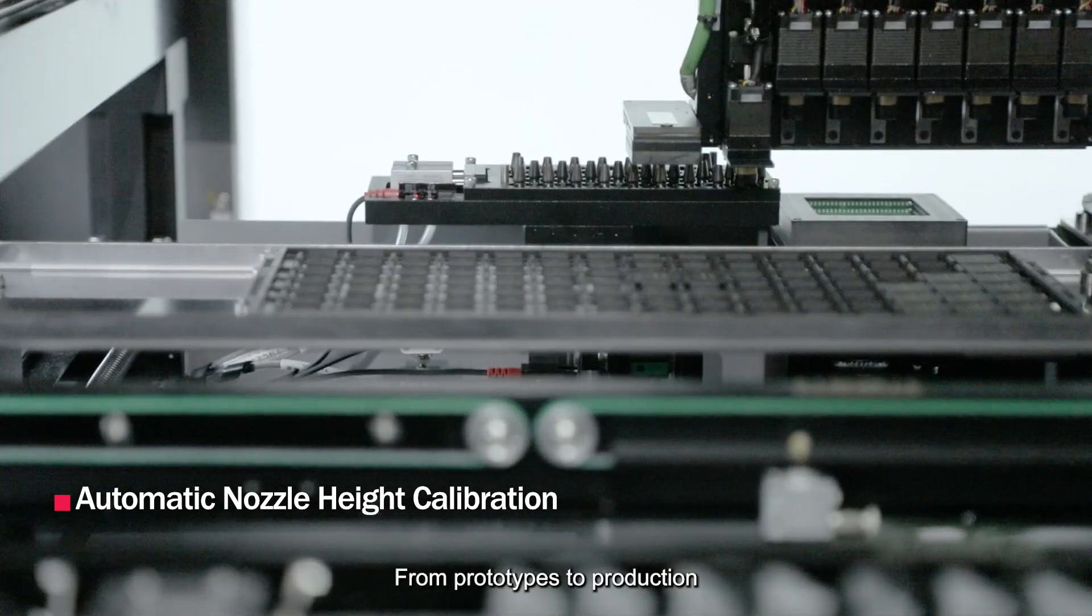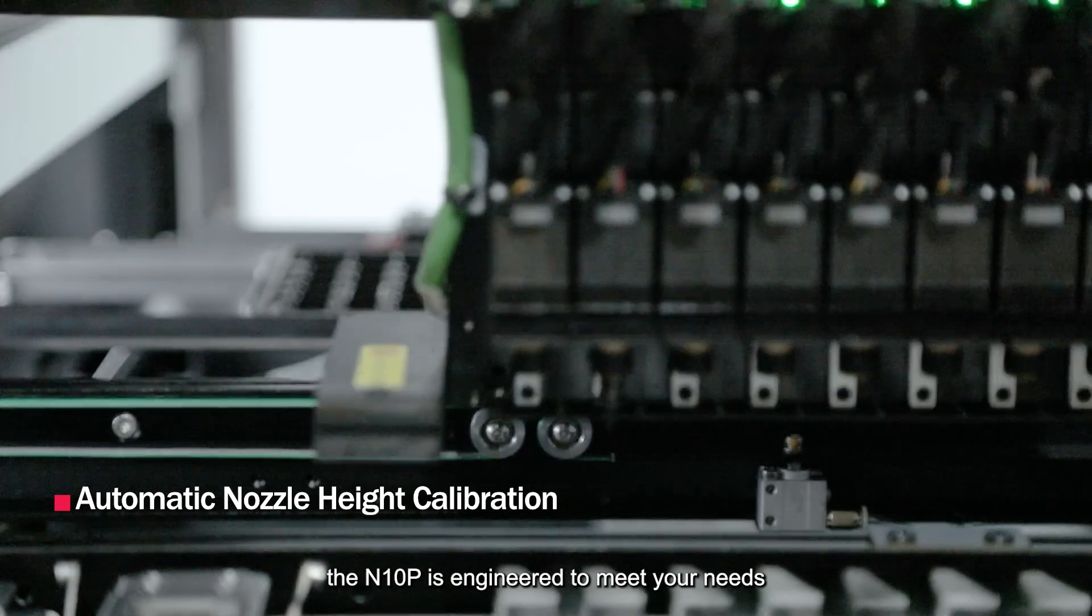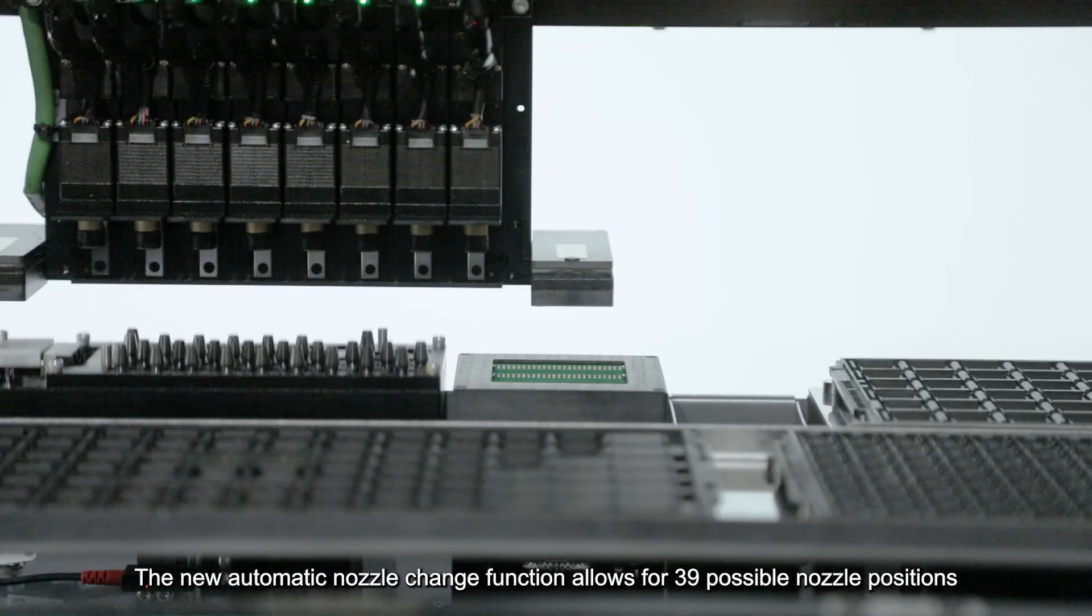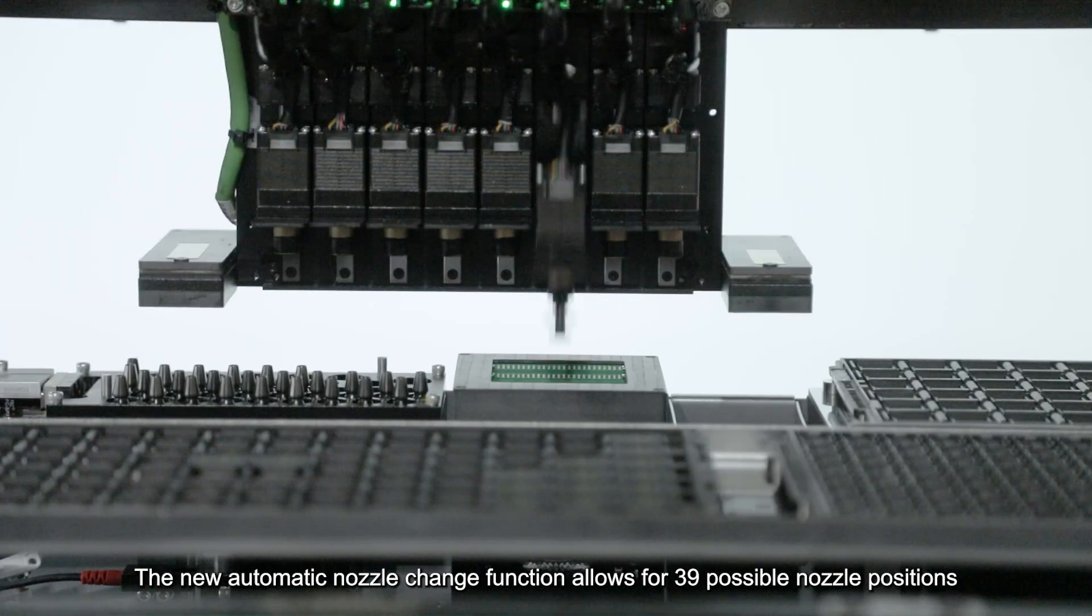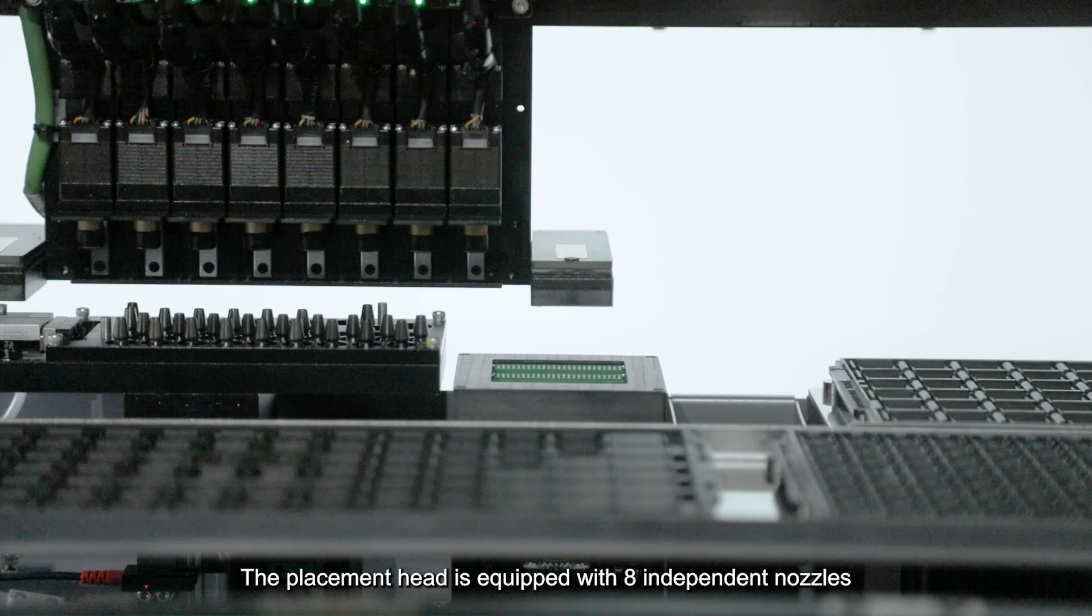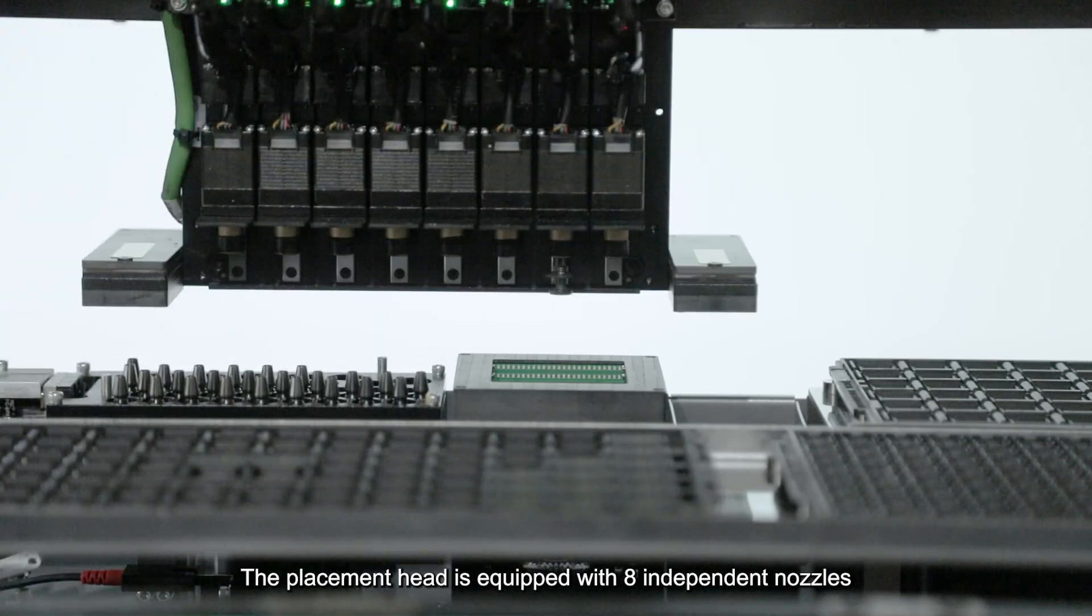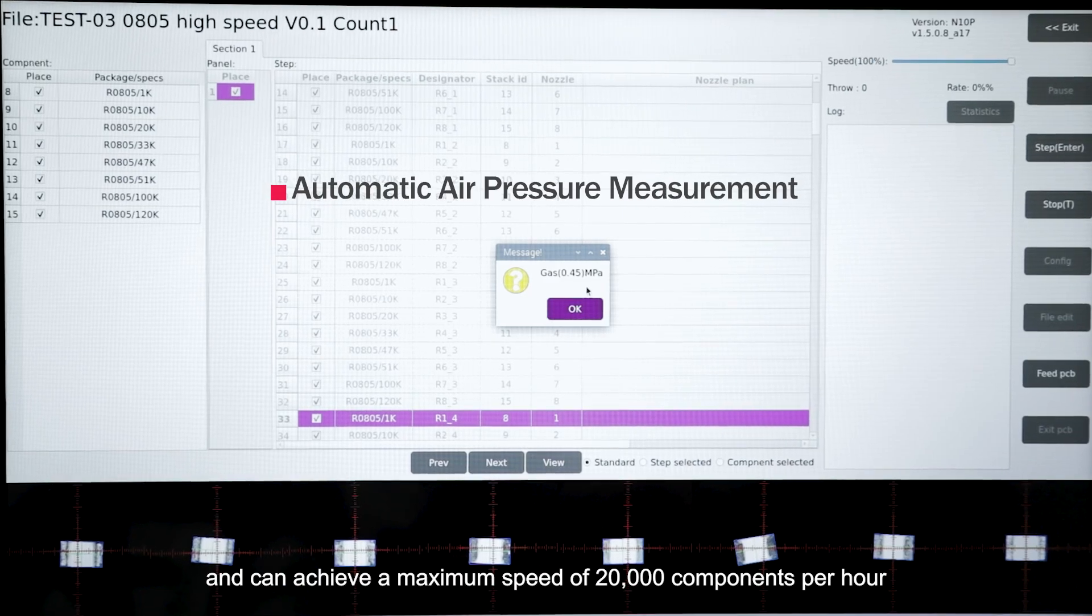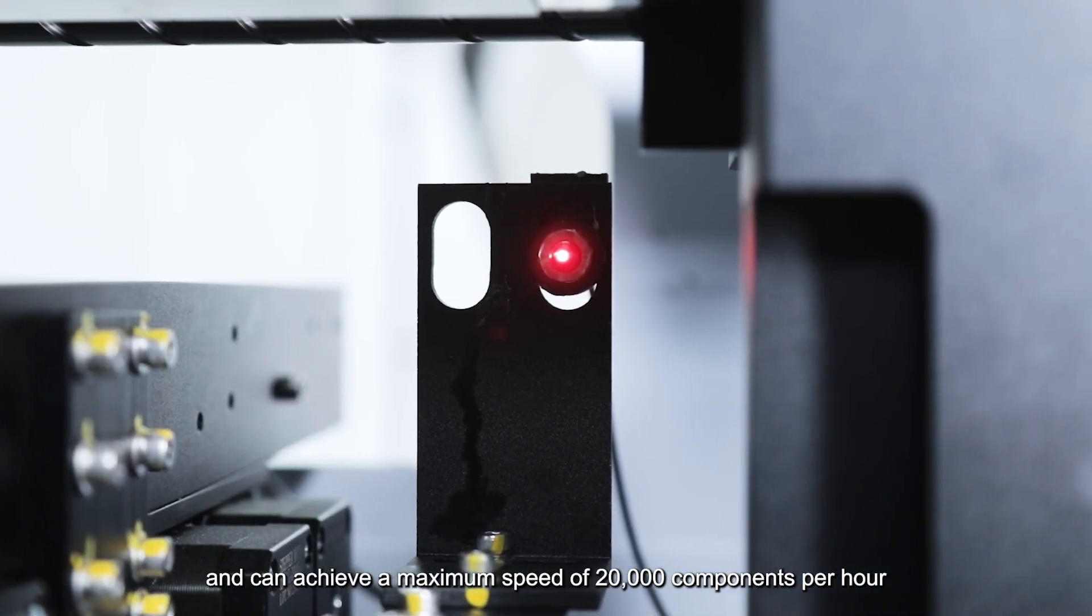From prototypes to production, the N10P is engineered to meet your needs. The new automatic nozzle change function allows for 39 possible nozzle positions and automatic nozzle height calibration. The placement head is equipped with eight independent nozzles for simultaneous component pickup and can achieve a maximum speed of 20,000 components per hour.